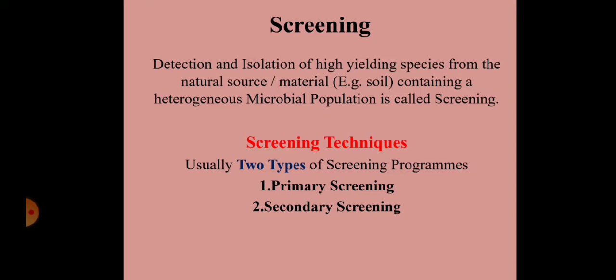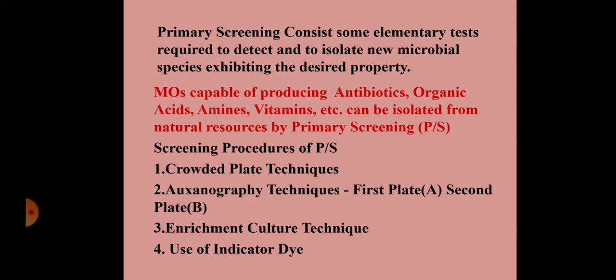Screening is generally of two types: primary screening and secondary screening. Primary screening is always followed by secondary screening. Screening involves detecting and isolating a particular microorganism from a natural source like soil or water which has some industrial importance.